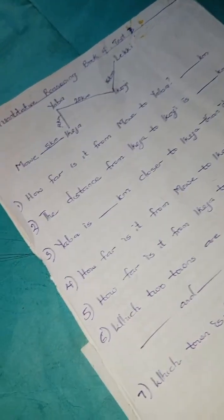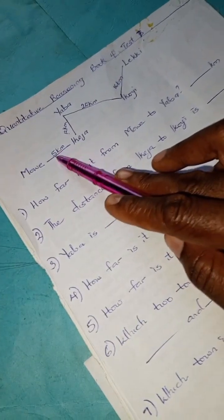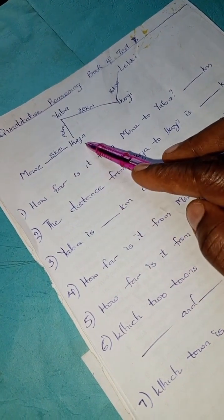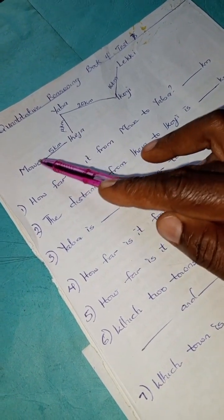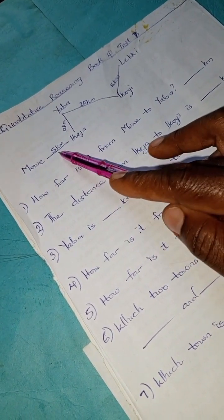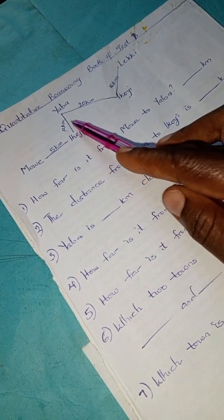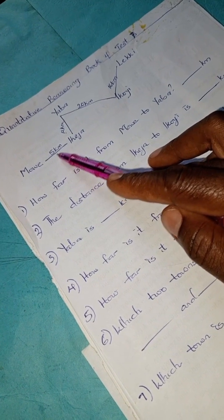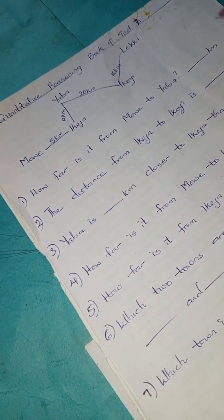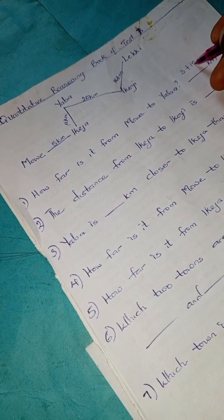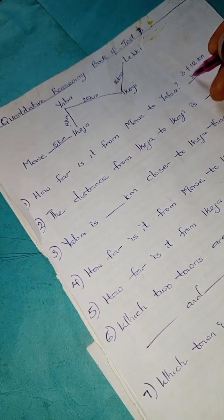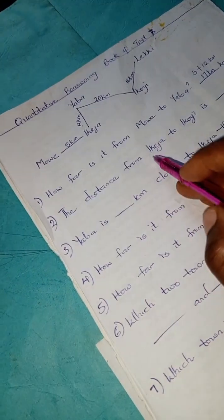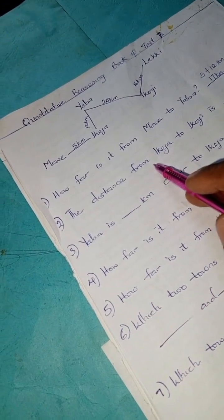We have how far is it from Mui to Yaba? This is Mui to Yaba. So Mui, you have to get to Ikeja before Yaba. From Mui to Ikeja we have 5 kilometers, and Ikeja to Yaba is 12 kilometers. So 5 kilometers plus 12 kilometers, you have 17 kilometers.